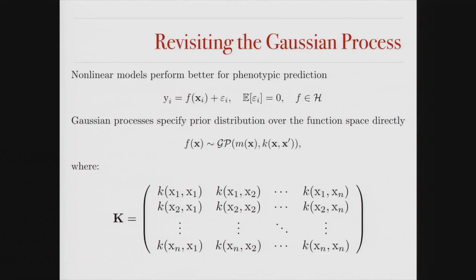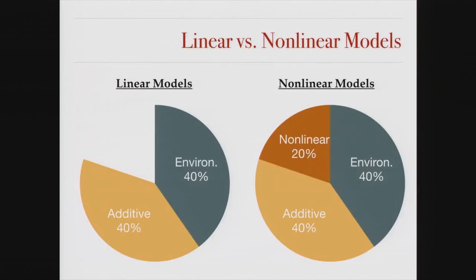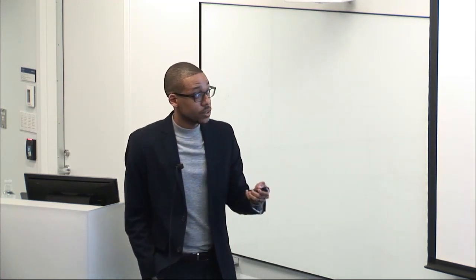I showed you the first step already — we did the Euler characteristic. I'm going to use Gaussian processes as our model of choice. Now we need to derive an association measure. The reason I like GPs is because they show you the whole picture. In linear models, you have this additive effect and environmental effect, but you're missing the nonlinear piece. In nonlinear methods — machine learning, whatever it might be — you live in a high-dimensional space with high predictive power because you're seeing the entire Pi. The issue is in linear regression you have interpretability — effect sizes, coefficients for variable selection and hypothesis testing. In nonlinear methods, the classic idea of variable selection is lost.